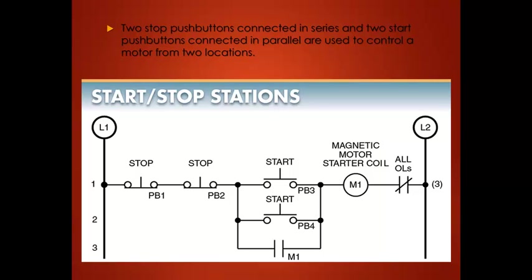Two stop push buttons connected in series and two start buttons connected in parallel are used to control a motor from two locations. Either stop button can be pushed to de-energize the circuit, and either start button can be pushed to energize the motor starter. A latch — or memory, three-wire control — provides an alternate path of current flow through a contact when the motor starter energizes.